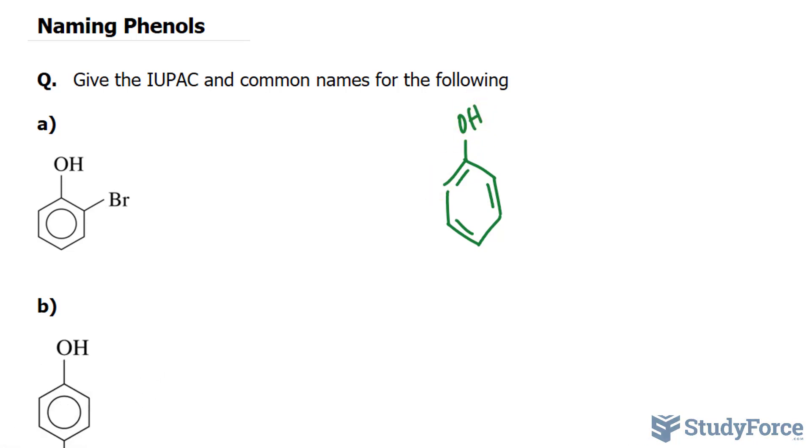When it comes to naming them, we start numbering the carbons where the OH is found. So that's C1. In our compound, we have a substituent bromine. Rather than going counterclockwise, we should go clockwise because the bromine happens at C2 from this direction. So we have a bromine right here. We'll write down 2-bromo, and the base for this molecule is phenol. So 2-bromophenol. The name right there is the IUPAC name.